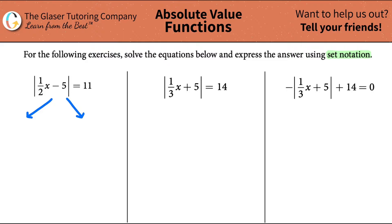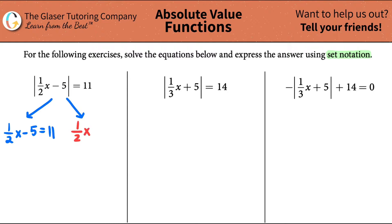We're going to make two equations now. Because technically, one of the equations was what was stated: one-half x minus 5 equals 11. But just like we said, what if this was equal to negative 11? The absolute value would turn it into a positive. So we could have had one-half x minus 5 equals negative 11. Once you can't progress further and everything is blocked by the absolute value, you split into two equations — one equaling the positive answer and one equaling the negative answer. So we're going to have two answers.